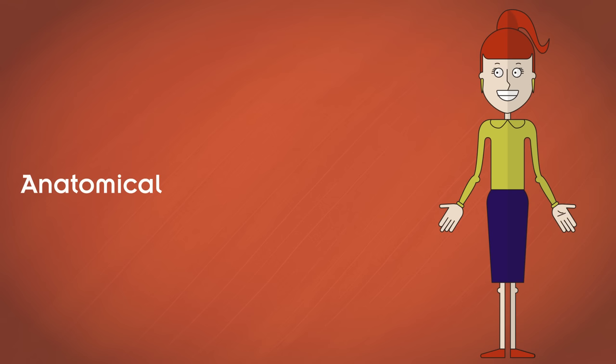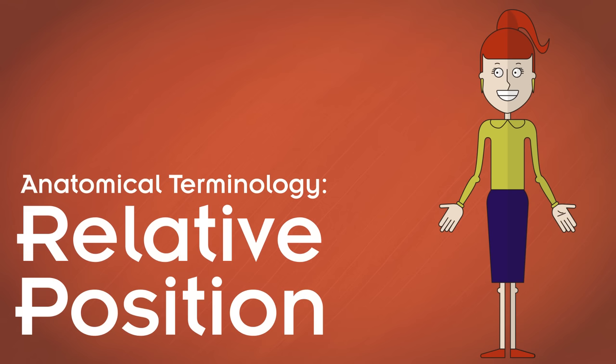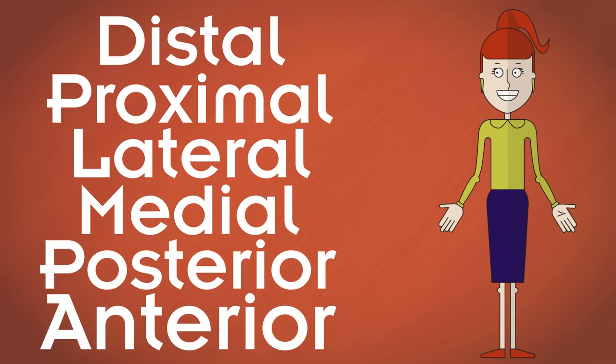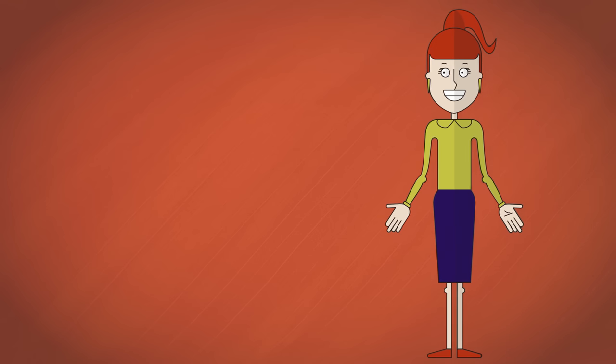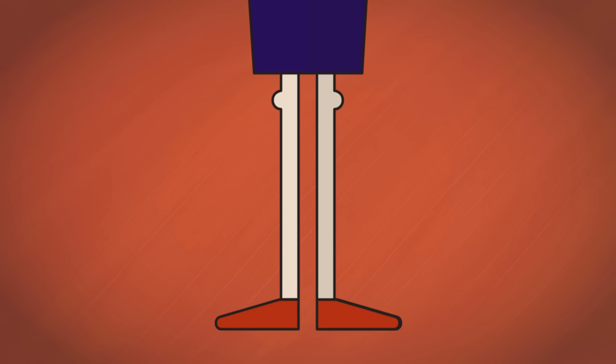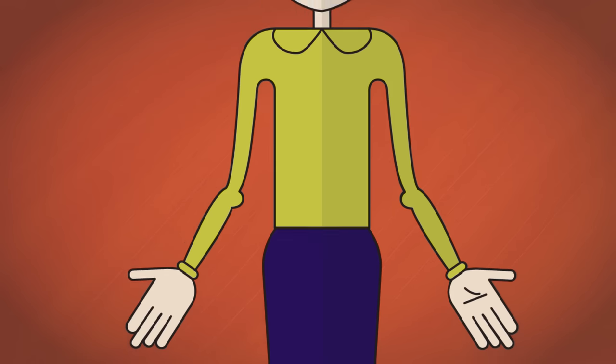Welcome to Anatomical Terminology, Relative Position. In order to have a common set of words to describe the locations of a person's body parts, we assume the person is in the anatomical position. In this position, the person is standing erect and facing forward with the legs slightly apart and the palms facing forward in the supinated position.